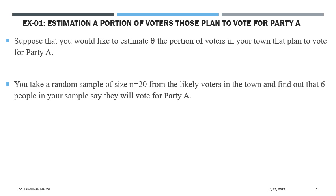From the sample, 6 out of 20 voted for party A, giving an estimate of theta = 6/20 = 0.3, which is 30 percent. This estimate alone is not very good — it says 30 percent, but we can't infer further about whether party A will win or lose. So we seek additional information.